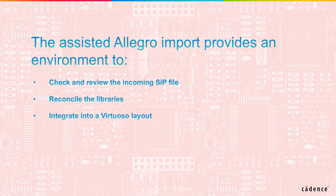The assisted Allegro import provides an environment to check and review the incoming ZIP file, reconcile the libraries, and integrate into a Virtuoso layout.